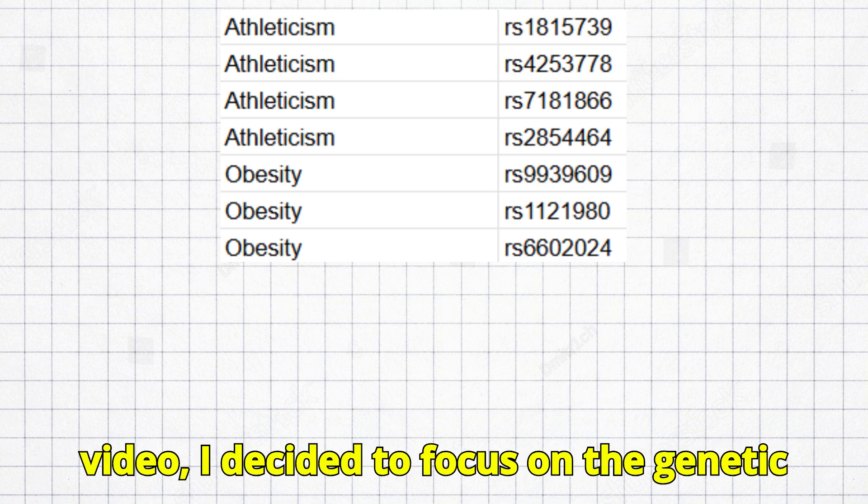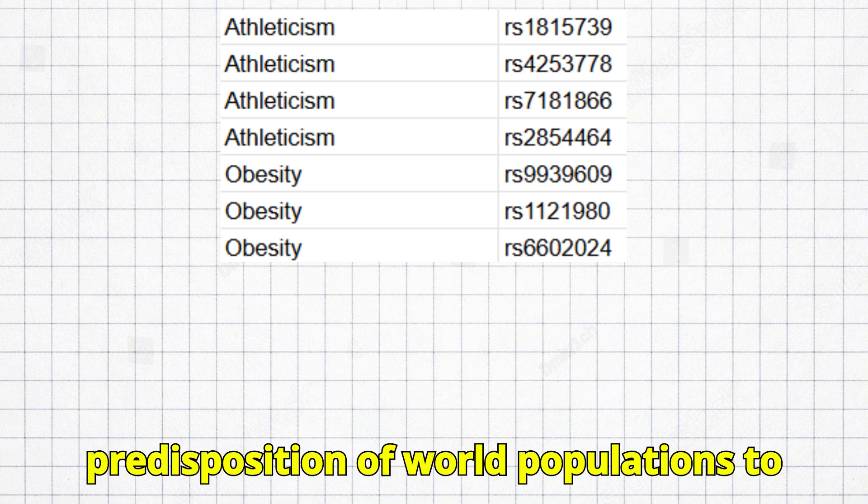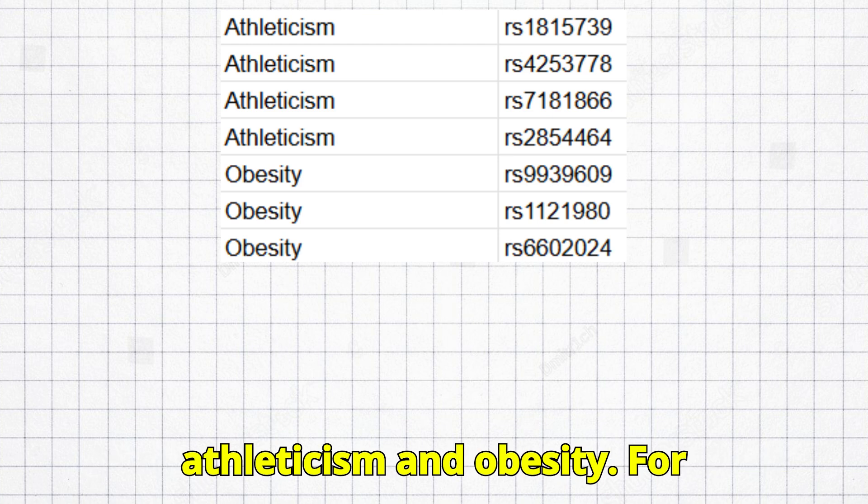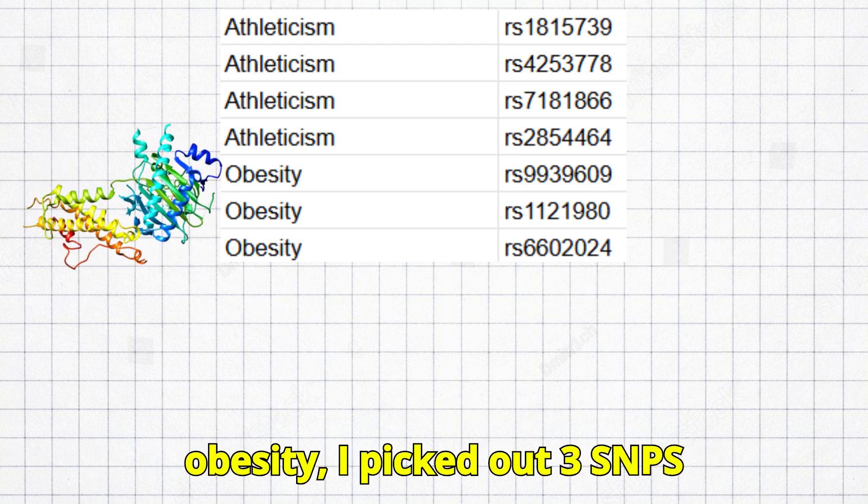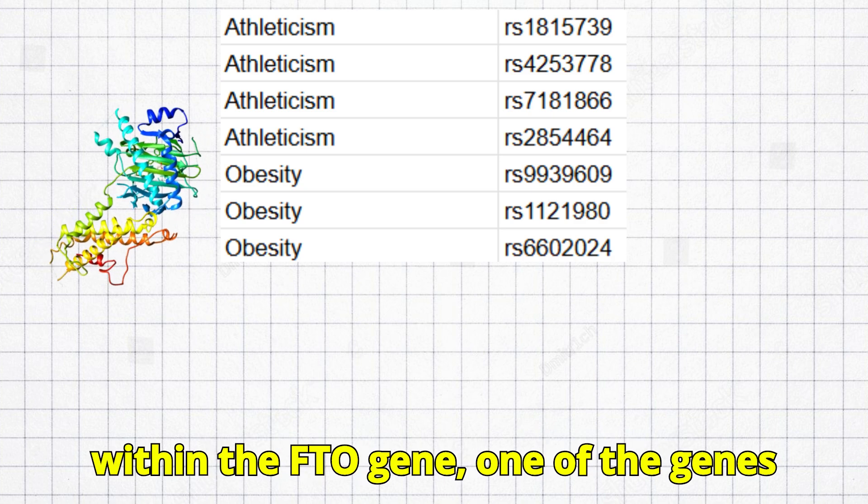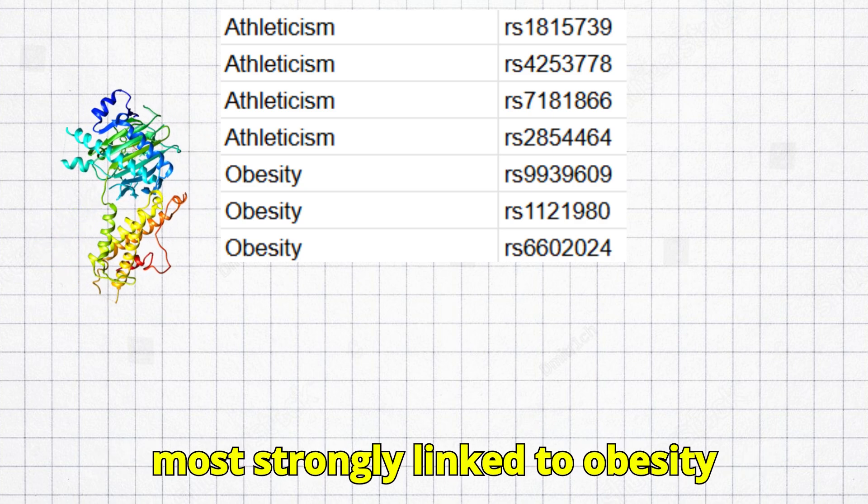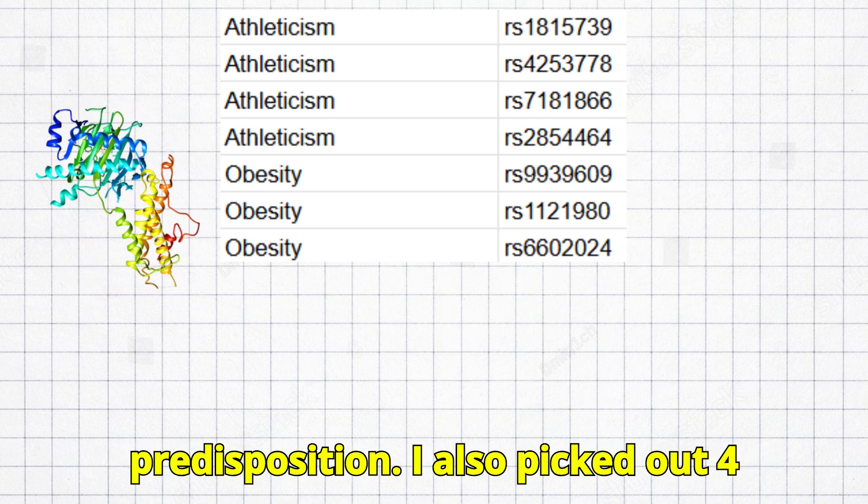For this video, I decided to focus on the genetic predisposition of world populations to athleticism and obesity. For obesity, I picked out 3 SNPs within the FTO gene, one of the genes most strongly linked to obesity predisposition.